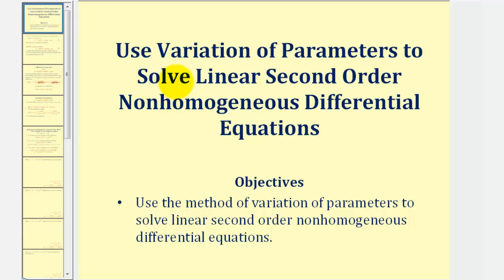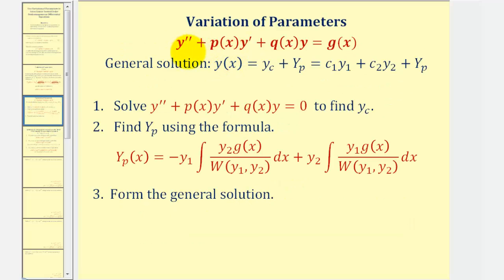Welcome to an example on how to use the Variation of Parameters method to solve a linear second order non-homogeneous differential equation. We'll be solving a differential equation in this form, where g of x is not zero. The general solution will be y of x equals y sub c, the complementary function, plus big Y sub p, a particular solution, which can also be written in a form where y sub one and y sub two form a fundamental set of solutions to the corresponding homogeneous differential equation.